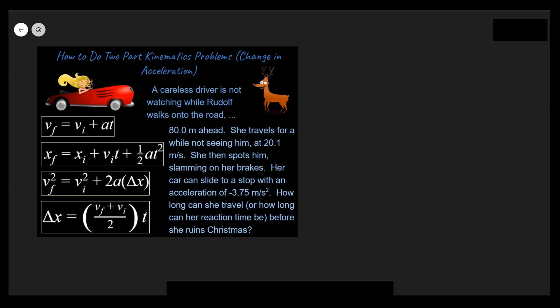This problem is about a driver that spots Rudolph 80 meters ahead of her and she's just cruising along at a constant velocity. We're going to start by writing down what we know. The 80 meters is going to be our stopping distance — we'll assume it takes 80 meters for her to eventually come to a stop. It says she travels for a while, not seeing him, at 20.1 meters per second.